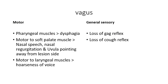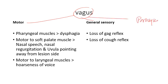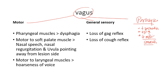The vagus nerve has three important components: the motor component, the general sensory component, and the parasympathetic component. Damage to the vagus nerve produces three major clinical effects.